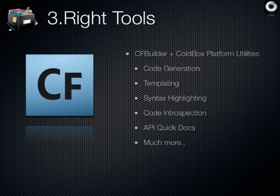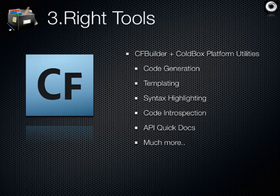CF Builder is a great tool — and there's even a free version called CF Builder Express. Most people don't know about it; when it expires, you just say keep going and it keeps working, giving you about 70-80% of features. You can still use the ColdBox utilities, extensions, code generation, templating, syntax highlighting, code introspection, and access to API docs right within Builder. It really accelerates development.